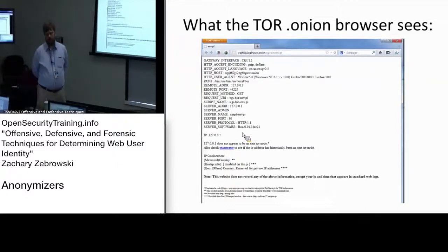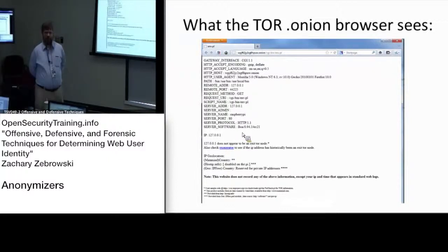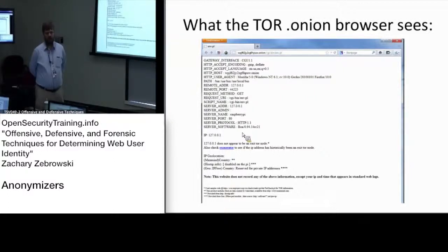When you tell the TOR client that you want to run a hidden service, it will generate two files in a directory called 'hidden services' under the TOR configuration directory. That will tell you what your public DNS name is, and if you know that public DNS name you can get there. It has to be advertised - people generally advertise it through a wiki page within the .onion namespace which has a directory listing for everything. Alternatively, people leave it unlisted so that only people who know the URL can actually get there.